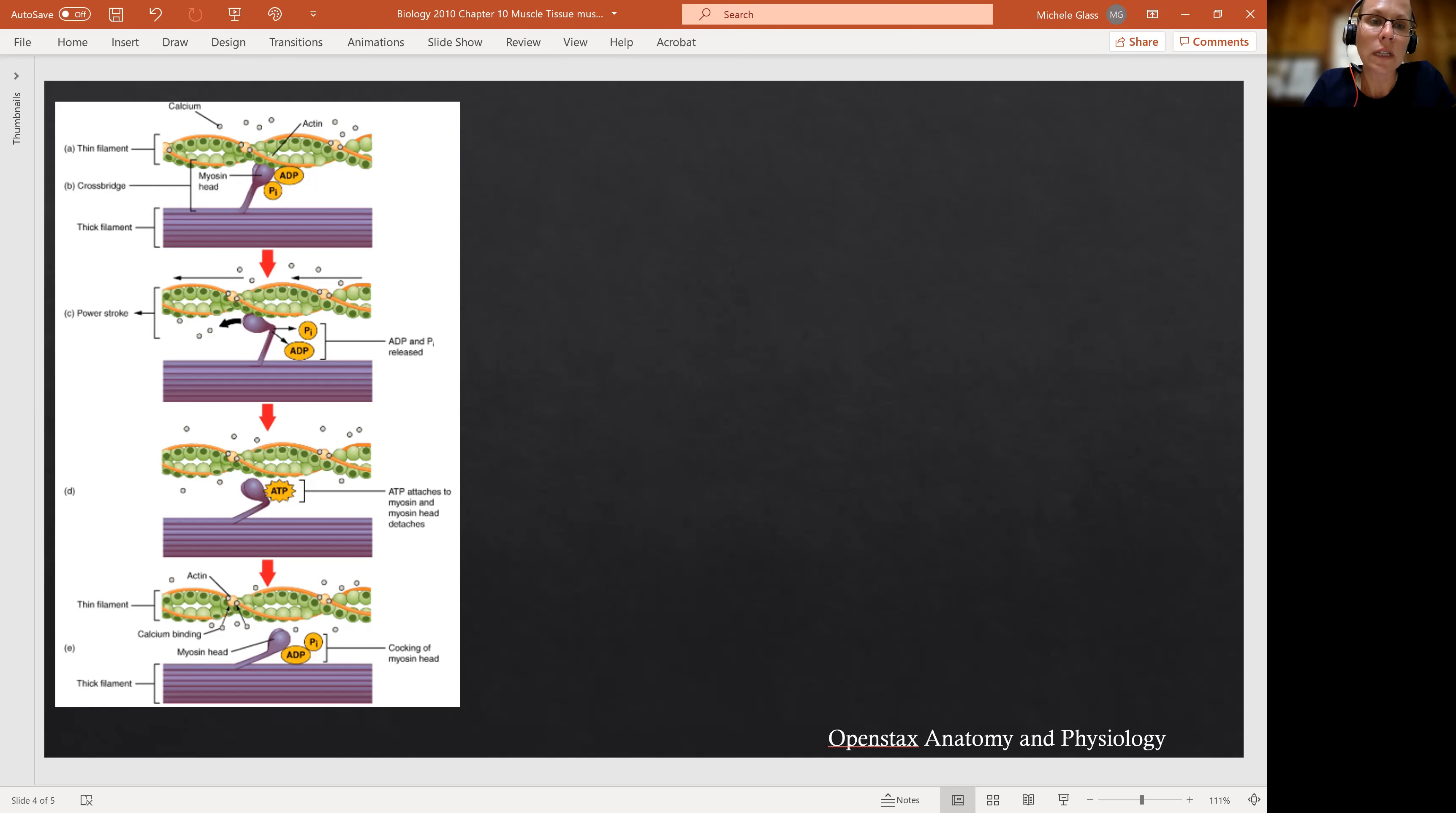We also are seeing the thick filament here shown in this purplish color. Remember, the thick filament is composed primarily of myosin. We talked about myosin as looking sort of like a golf club where it has a tail and this flexible neck and then this head. And the head is the part of the molecule that is attracted to and wants to bind with actin. So this is what we're looking at next.